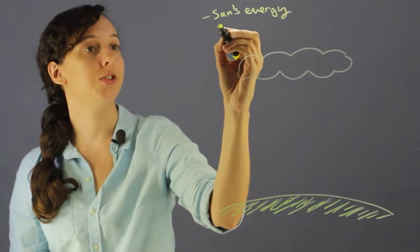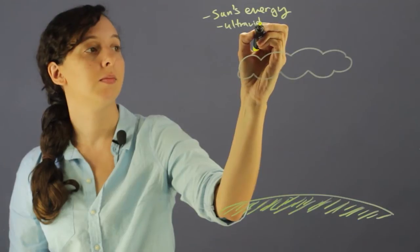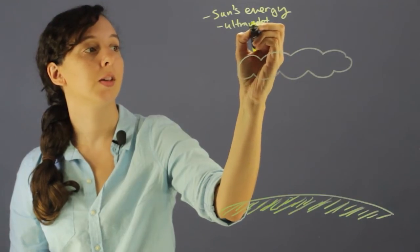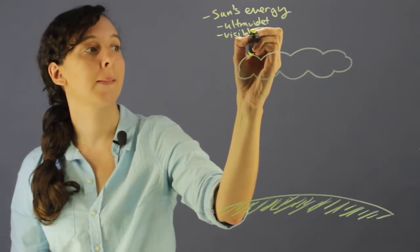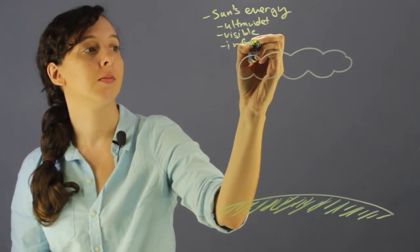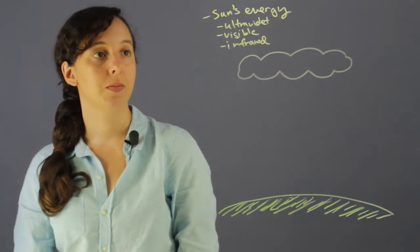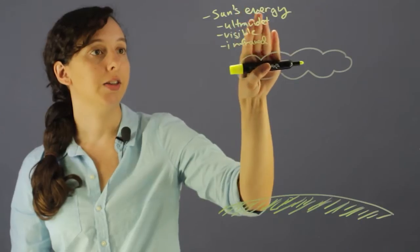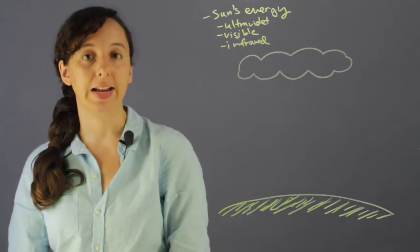And what that translates to is ultraviolet light and some light from the visible spectrum and even some infrared light. So kind of on the spectrum of light these three different types are coming in from the Sun and there's a bunch of different fates that we can have.